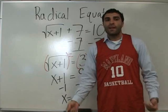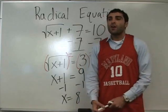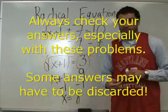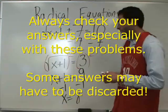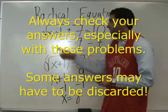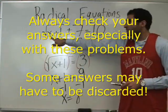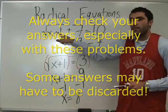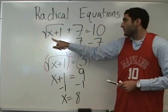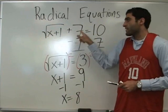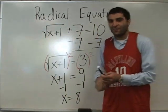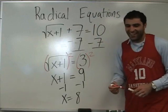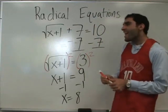Here's the thing we have to start keeping in mind now: always check your answers, because some of them will not work. Let's plug in — 8 plus 1 gives us the square root of 9, which is 3. And 3 plus 7 equals 10. It works!